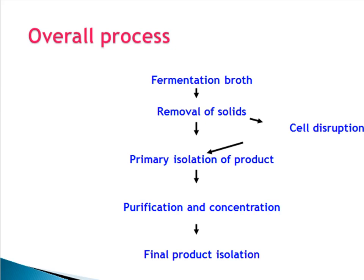The overall process includes: first, fermentation broth is separated; then solids are removed from broth; if the product is intracellular, then cell disruption is necessary; otherwise, primary isolation of product is started directly; then purification and concentration of the product; and finally, the final product will be obtained in purified isolated form.